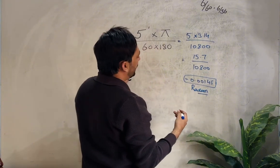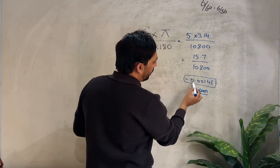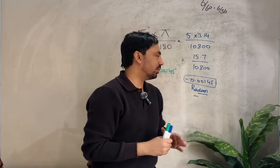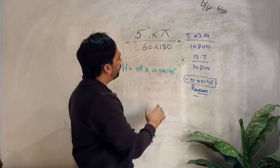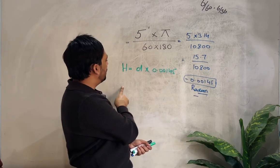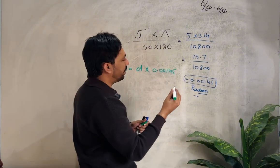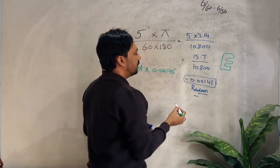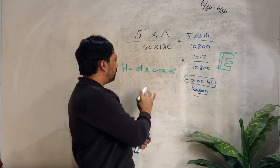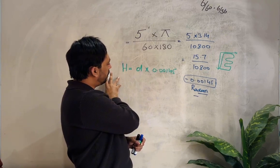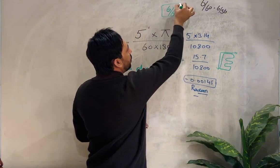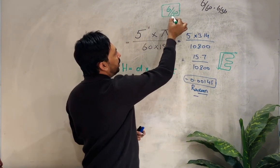We have converted the five minutes of arc into radians: 0.00145 is the radian value for five minutes of arc, and this is a constant. Now with this value we can find the height and width of the optotypes on the Snellen chart. The formula is: h = d × 0.00145, where h is the height or width of the optotype, and d is the denominator. For example, the top letter is 6/60, so the denominator is 60.